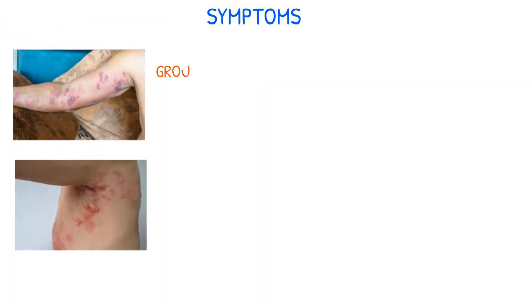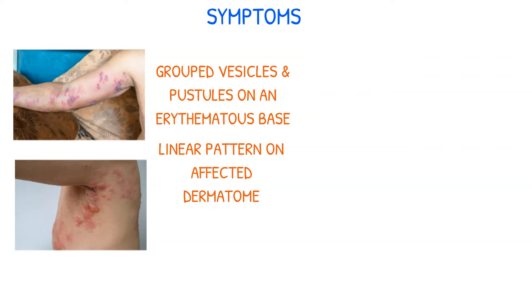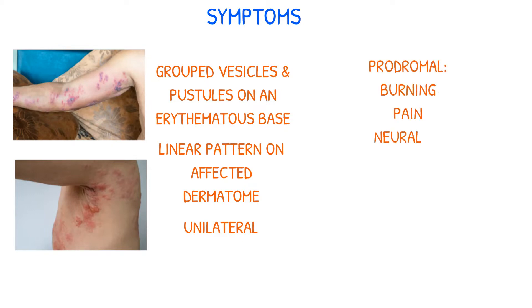Herpes zoster manifests with symptoms such as grouped vesicles and pustules on an erythematous base, arranged in a linear pattern along the affected dermatome. Typically, these eruptions are unilateral and are easily found on the face or torso. Prior to the outbreak, patients may experience burning, pain, and neuralgia.